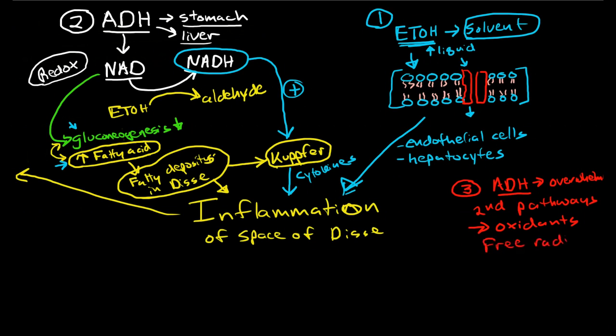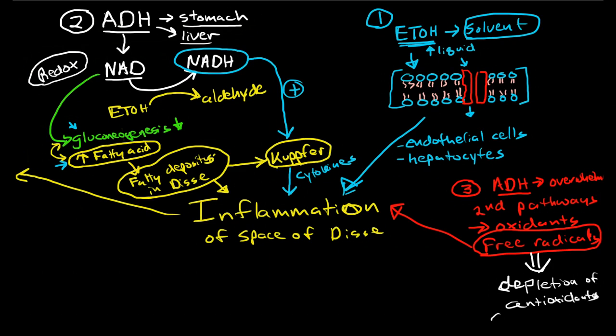And these secondary pathways are using other oxidants that produce large amounts of free radicals. And these free radicals cause inflammation. And because there's so many free radicals, it causes the liver to... The liver's trying to counteract these free radicals. So it actually causes depletion of antioxidants. Chief among them, the major antioxidant in the liver is glutathione.